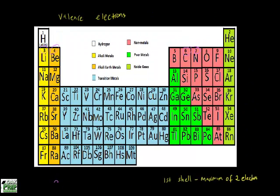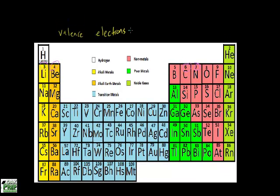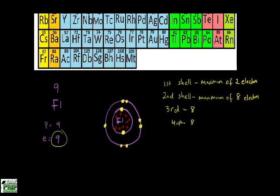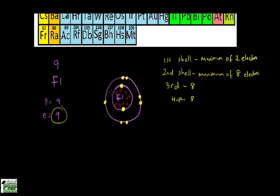Now is a good time to define what a valence electron is. Valence electrons are the electrons on the outermost shell. For fluorine, the outermost shell is the second one, and counting its electrons — one, two, three, four, five, six, seven — gives us seven. So fluorine has seven valence electrons.